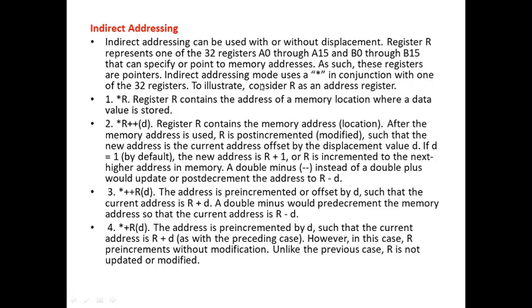Indirect addressing mode uses a star in conjunction with one of the 32 registers. Consider R as an address register. With *R, register R contains the address of a memory location where a data value is stored, which is just the general concept of a pointer.